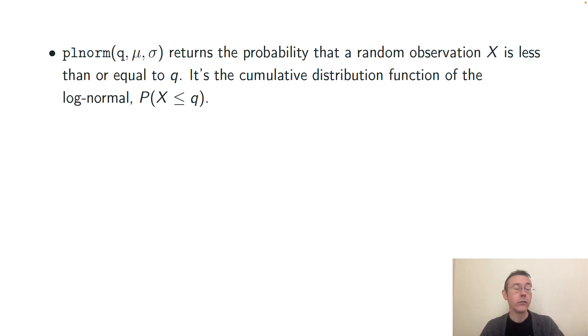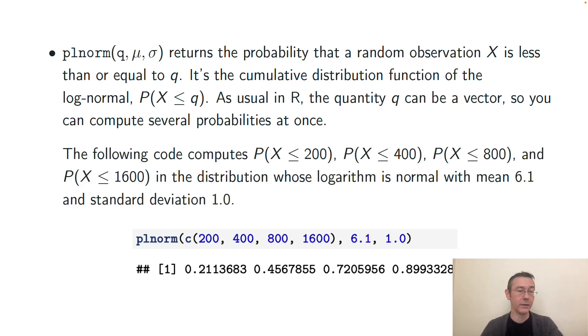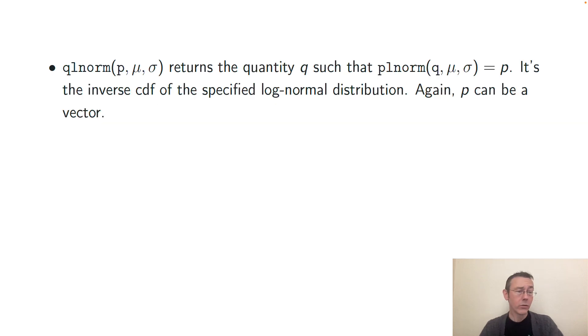plnorm is your cumulative distribution function. It's going to return the probability that a randomly drawn value is less than or equal to the specified number q. Again, you have to specify your mu and your sigma just as before. Now, as usual in R, you can specify q as a vector, so you can compute several probabilities at once. Here's some code that's going to compute probability that X is less than 200, 400, 800, and 1600 in a distribution whose logarithm is normal with mean 6.1 and standard deviation 1.0.